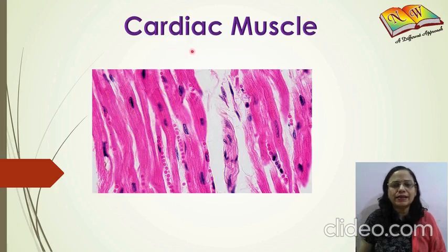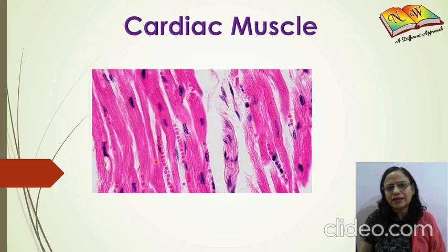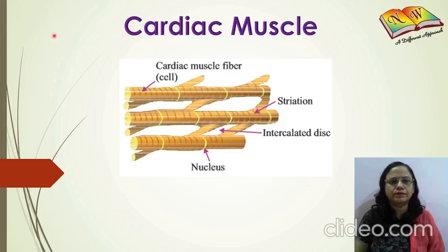Next are cardiac muscles. The word cardiac is associated with the heart, so these are muscles exclusively found only in the heart. In the microscopic view, the blue spots are the nuclei. These muscles are branched and they form sheets — you can see cross-connections between strands, forming sheets of cardiac muscles.